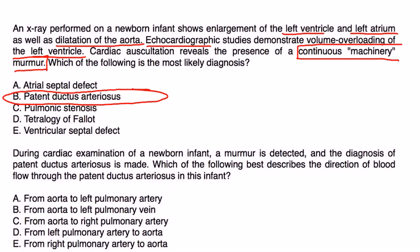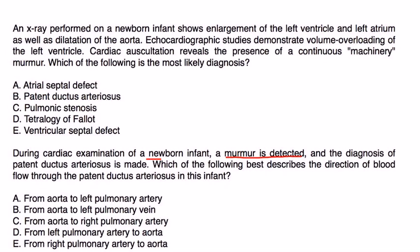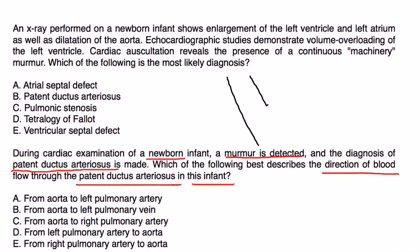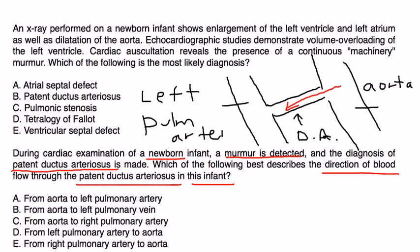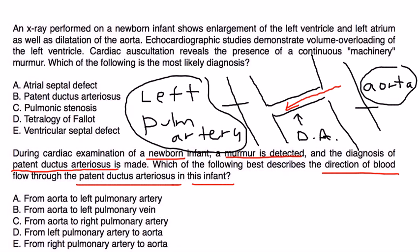Vignette 2: During a cardiac exam of a newborn, a murmur is detected and a diagnosis of patent ductus arteriosus is made. Which best describes the direction of blood flow through the PDA in this infant? Remember, this baby has already been born, so the pressure gradient has reversed. The vessels are the aorta and the left pulmonary artery, so blood flows from the aorta to the left pulmonary artery — choice A.